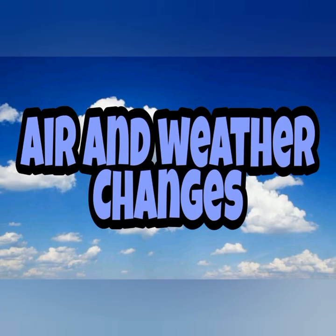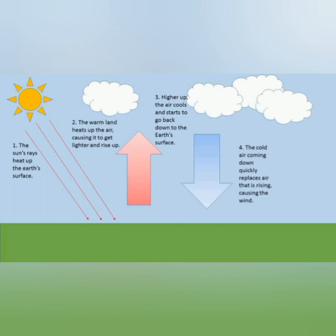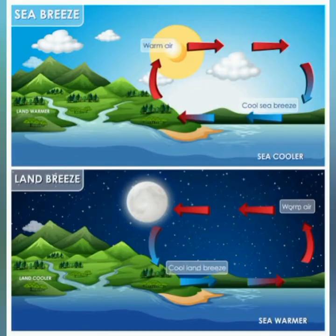Our next topic is air and weather changes. The movement of air causes many changes in the atmosphere and weather. When the sun heats up the surface of the earth, the air near the surface becomes hot and rises up, and cold air takes its place. This cycle continues and gives rise to the sea breeze and land breeze.